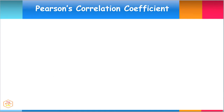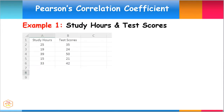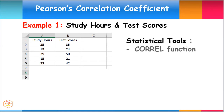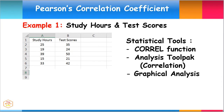For our specific example, we would like to determine the relationship between the study hours of various students and their test scores. We can use the CORREL function or the Correlation Test in the Analysis Tool Pack to find the correlation coefficient between these two variables. Also, we can use a graph to verify our conclusion from the data analysis.